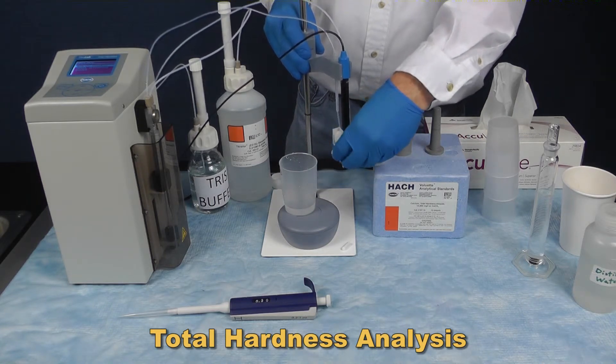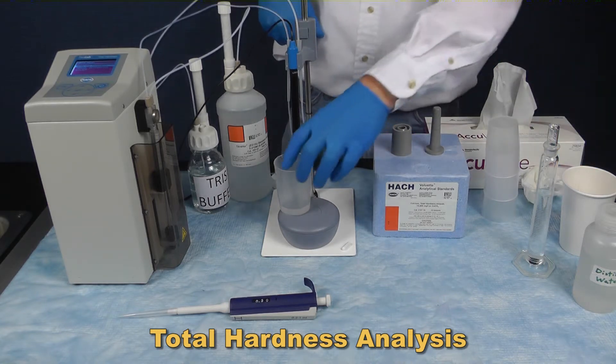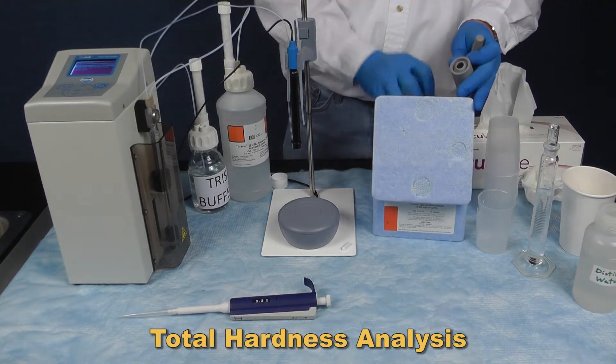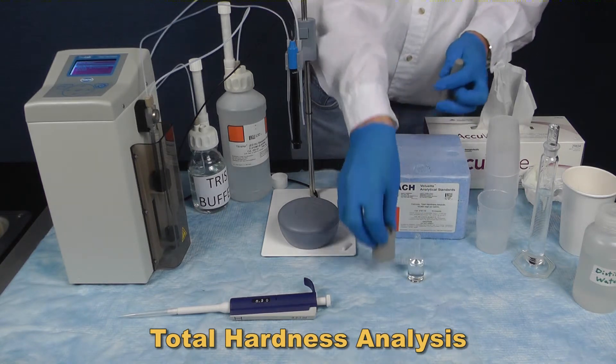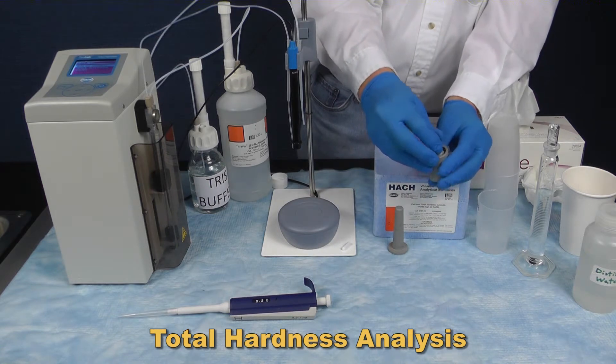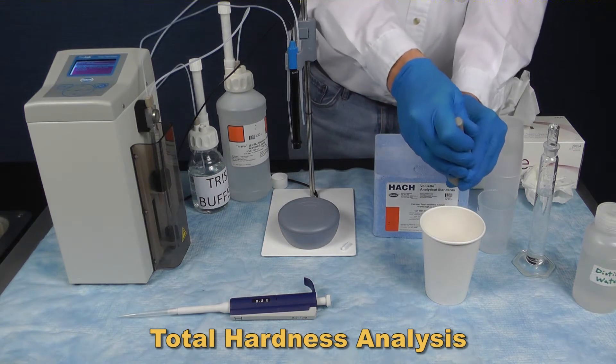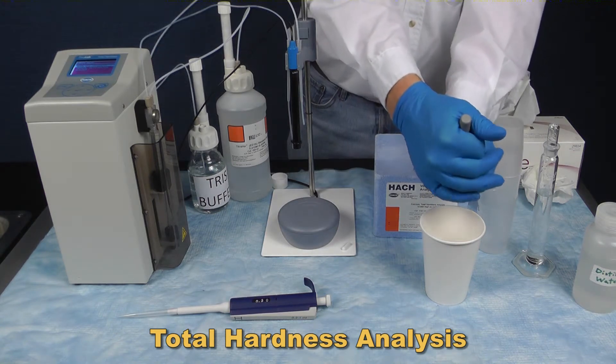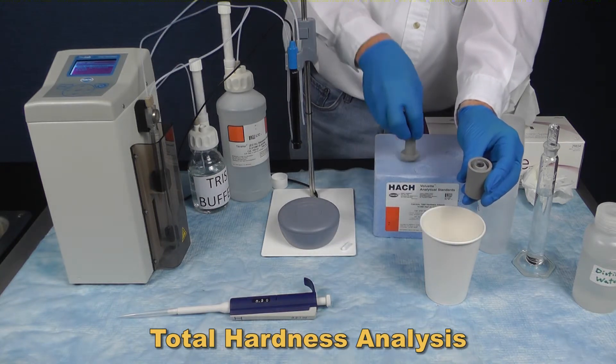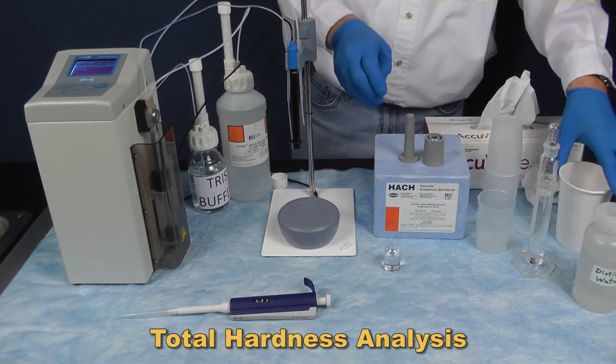To make the standard, break open a new ampule of the 10,000 milligrams per liter CaCO3 standard using an ampule breaker.